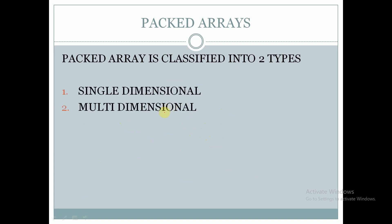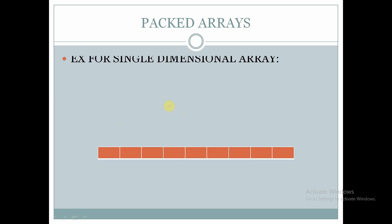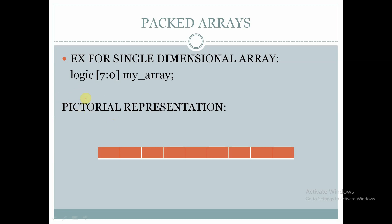Packed arrays are also classified into two types: one is single dimensional array and the other is multidimensional arrays. For a single dimensional array, the data type of the array should be mentioned, followed by the size of the array, and then the name of the array. All the elements are stored in contiguous memory, one after other, in only one row.